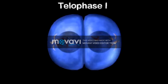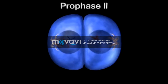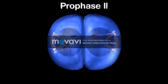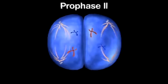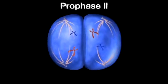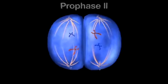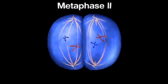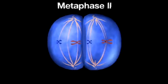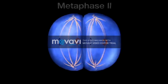The second division of meiosis now proceeds. During prophase II, a spindle forms in each of the two new cells. During metaphase II, the chromosomes, still made up of sister chromatids, line up at the equator.